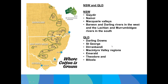Moving to cotton growing regions — cotton is grown from the central highlands in Emerald all the way to southern New South Wales under a few different climatic conditions, spanning both New South Wales and Queensland.